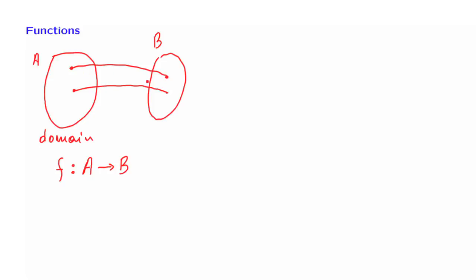Now, two elements of A may be mapped to the same element of B — this is allowed. What is important, however, is that every element of A is mapped to exactly one element of B, not more. But it is also possible that we have some elements of B that do not correspond to any of the elements of A.